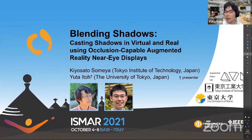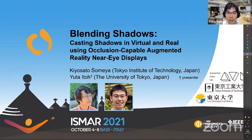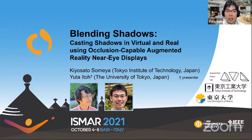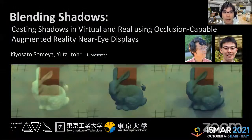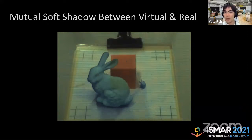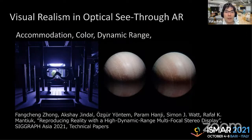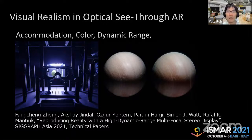There were some Zoom connection issues, but we are now sharing the screen. Hello, my name is Uta Ito from the University of Tokyo, Japan. This is joint work with my student Kiyosato Someya. We will talk about the work called Blending Shadows — casting shadows in virtual and real using occlusion-capable augmented reality displays. We want to solve visualization issues in see-through AR and achieve mutual soft shadows between virtual objects and the optically see-through real world.